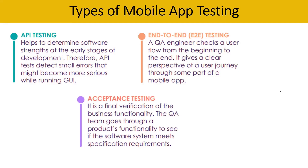Customers should not have any bad experience. You also need to perform acceptance testing. Under acceptance testing, this is the final verification of business functionality. The QA team goes through the product functionality to see if the software system meets the specification requirements. Normally, business users become a part of this kind of testing.